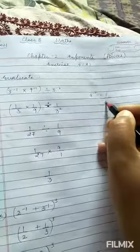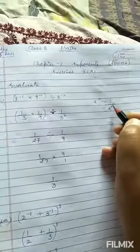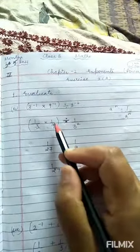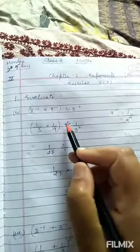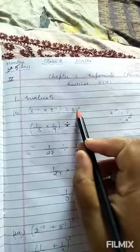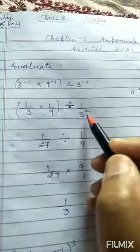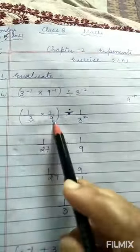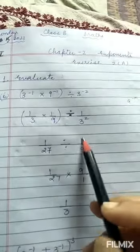Clear. Similarly, 9 to the power minus 1 can be written as 1 upon 9, divided by 3 to the power minus 2, which can be written as 1 upon 3 to the power 2. Now 1 times 1 is 1, 3 times 9 is 27, divided by 1 upon 3 to the power 2.